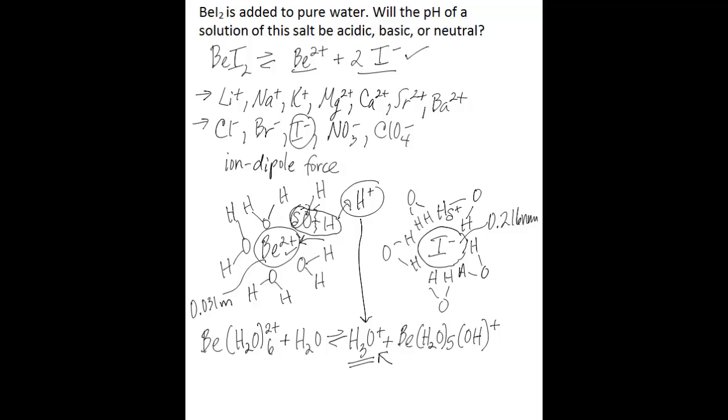Some other small, highly charged cations that make solutions more acidic include the cations of beryllium, iron 2+, cobalt 2+, nickel 2+, zinc 2+, aluminum 3+, chromium 3+, and iron 3+.